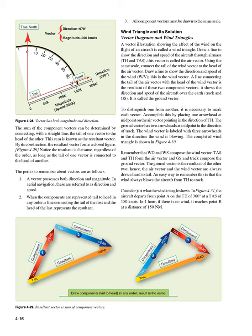Wind triangle and solution: a vector illustration showing the effect of wind on the flight of an aircraft is called a wind triangle. Draw a line to show the direction and speed of the aircraft through the airmass — TH and TAS. This vector is called the air vector. Connect the tail of the wind vector to the head of the air vector. Draw a line to show the direction and speed of the wind — WV. This is the wind vector. A line connecting the tail of the air vector with the head of the wind vector shows track and GS — it is called the ground vector.